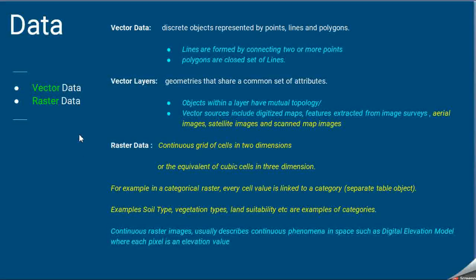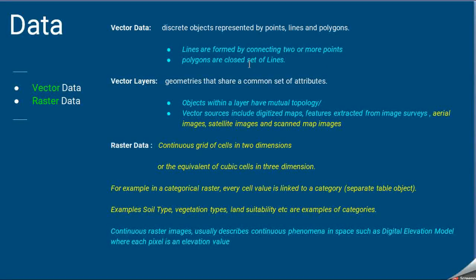Regarding GIS data types: if we talk about coordinates, that is vector data. If we are talking about two or more points and connecting them, we are creating lines, and with a closed set of lines we are creating polygons. That category we call vector data.